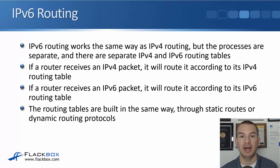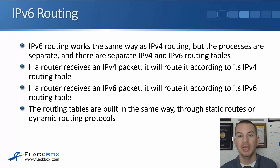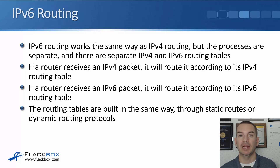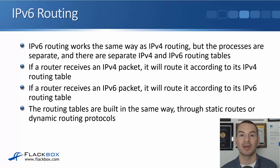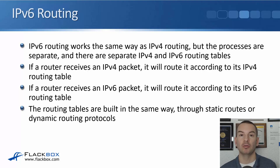So if a router receives an IPv4 packet, meaning it's got an IPv4 address as the destination, it will route it according to its IPv4 routing table. And if that same router receives an IPv6 packet, it will get routed according to its IPv6 routing table. For a router to be able to route IPv6 traffic, it needs to have IPv6 enabled — IPv6 unicast routing — its own IPv6 addresses, and the IPv6 routes in its routing table.